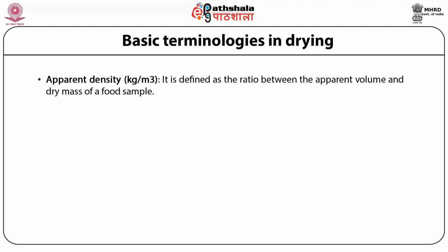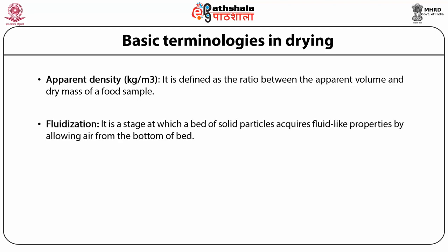Next is fluidization. It is a stage at which a bed of solid particles acquires fluid-like properties — the food samples, fruits and vegetables, are in a state of suspension about 1–2 mm away from the conveyor belt, and air is allowed from the bottom of the bed. The basic advantage of fluidization is that the air can have maximum surface area contact with individual fruits, vegetables, or particles, resulting in high heat transfer.